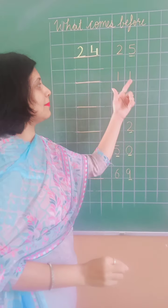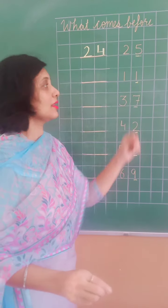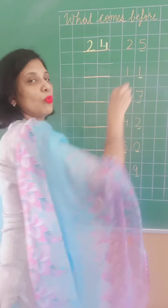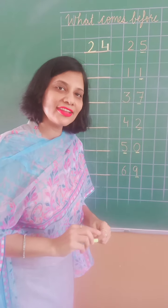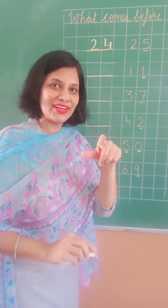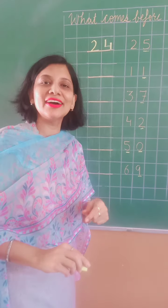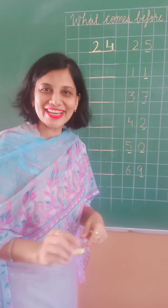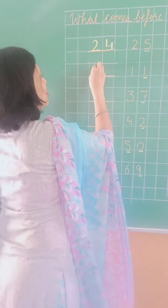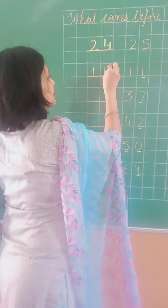Now the next number is 11. To 11 ka first digit kya hai? 1. 1 se pehle kya aata hai? 0. Theek na? To 11 se pehle kya aata hai? 10. So I will write 10 here.